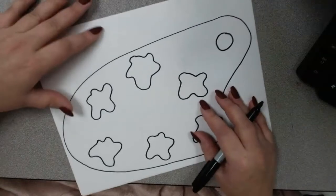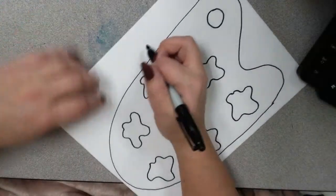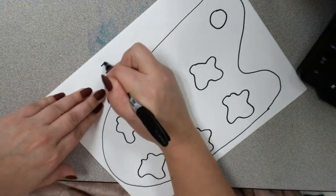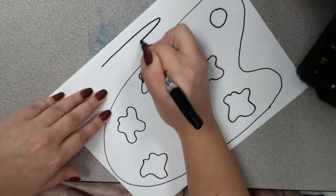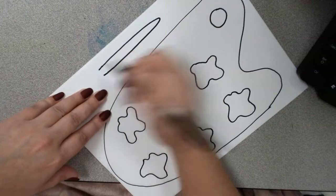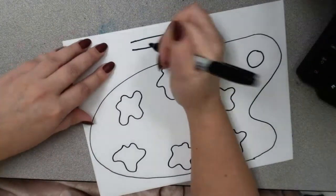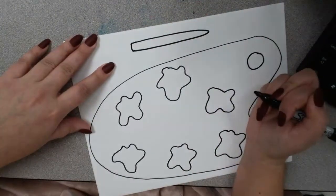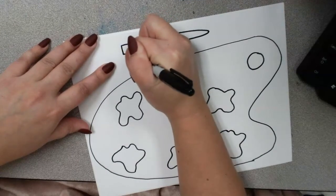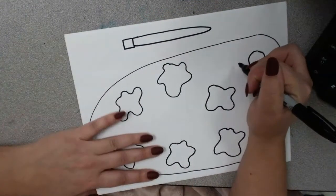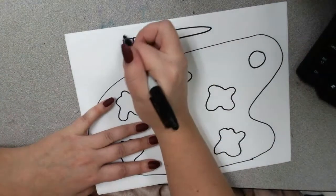If you want, you can add a paintbrush to the background like I did in mine. To draw your paintbrush, draw a long, skinny curve like this. Close it at the bottom. Add a little rectangle for the metal part.